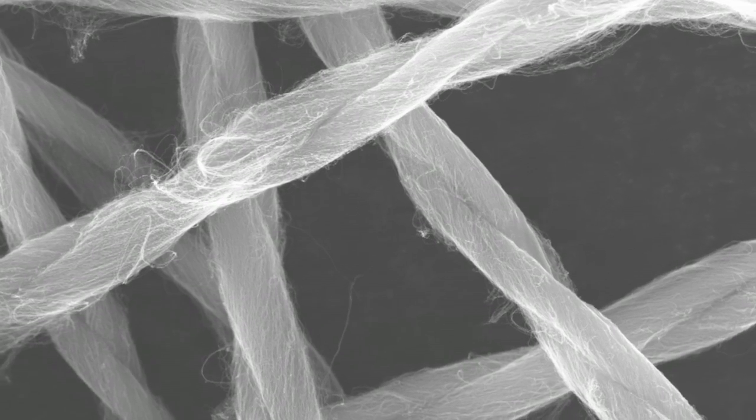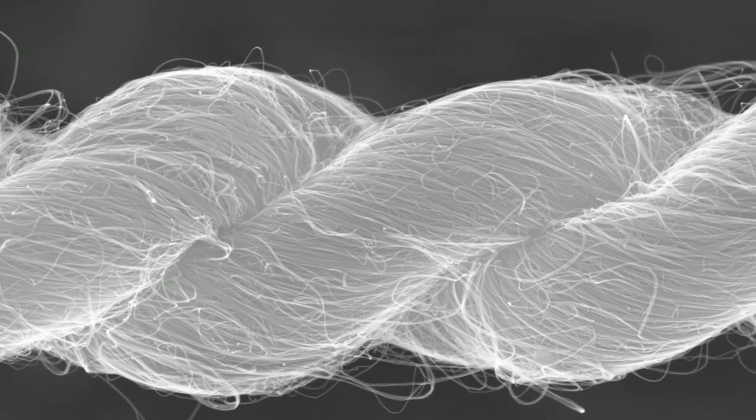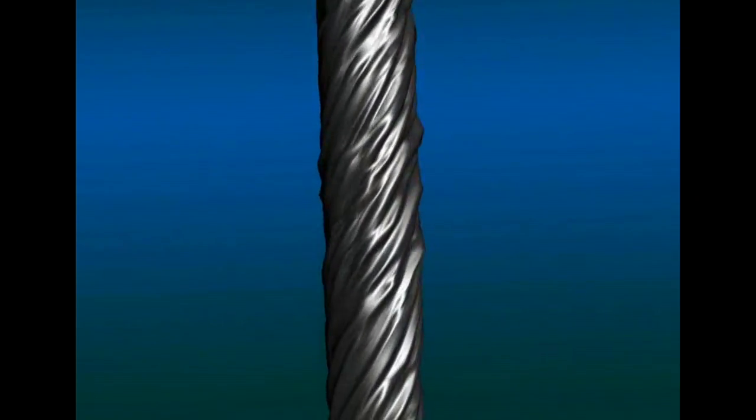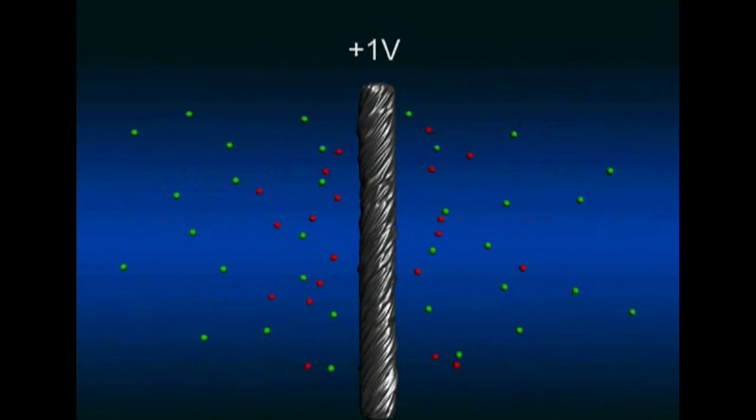Our carbon nanotube yarns are helical. When we apply voltage between the carbon nanotube yarn and a counter electrode, we inject electrons into our carbon nanotube yarn.